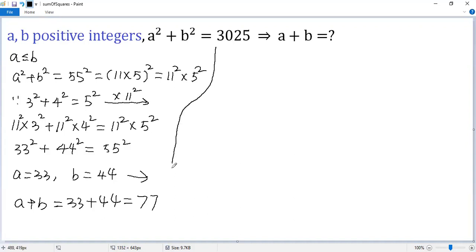Is it the only solution? To answer this question, let's figure out the range for b. We know b squared less than or equal to a squared plus b squared, which is 3025. Taking square root for both sides, we know b less than or equal to 55.